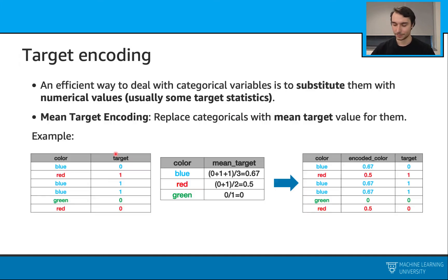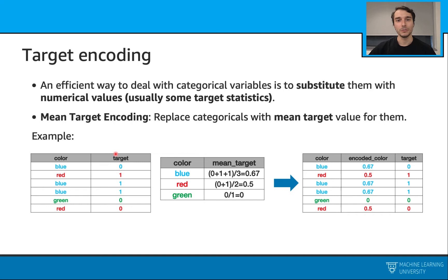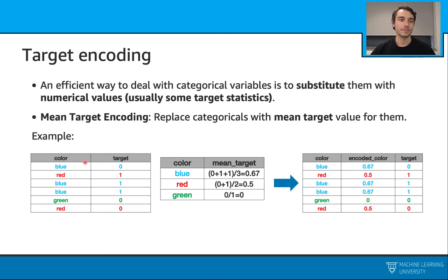Let's start with target encoding. This is a general purpose ML technique and also an efficient way to deal with categorical variables. What we do is replace our categorical variables with numericals, and we calculate those numericals from some target statistics. Mean target encoding is a well-known one — we replace our categoricals with the mean target value for them. Here is an example: assume we have a simple dataset with a color feature and a target. In color, we have blue, red, and green — three unique categories. In the target, we have either 0 or 1.